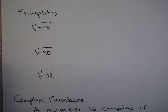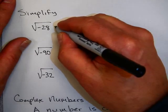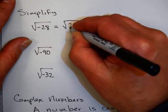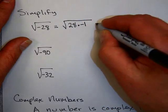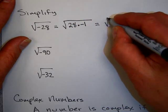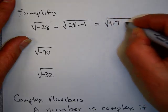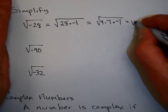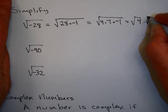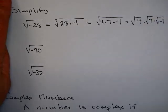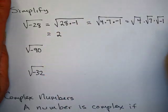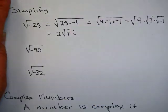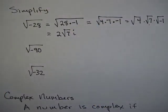Let's practice some of these. Let's see if you can do the square root of negative 28. Well, that's 28 times negative 1. The square root of 28 is 4 times 7 times negative 1, which I can split up into the square root of 4 times the square root of 7 times the square root of negative 1. The square root of 4 is 2, the square root of 7 I'll leave as the square root of 7, and the square root of negative 1 is i. It is conventional to write the number in front of i, giving 2√7 i.